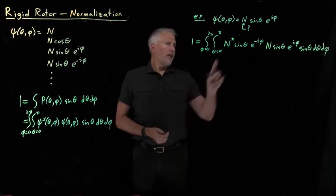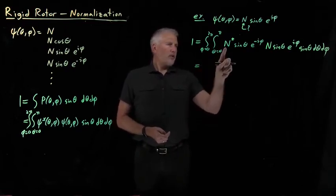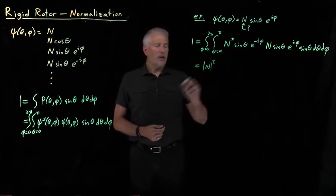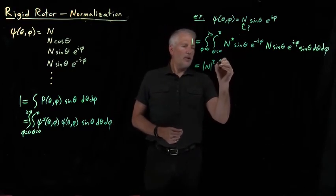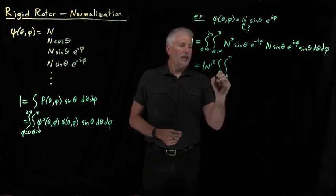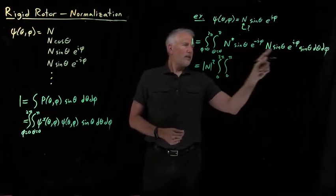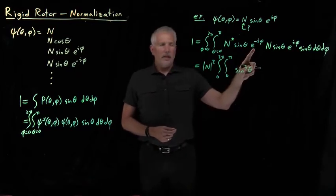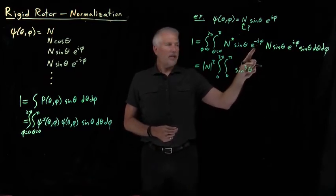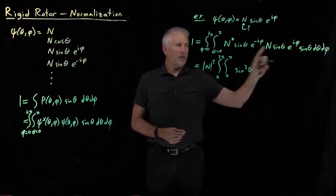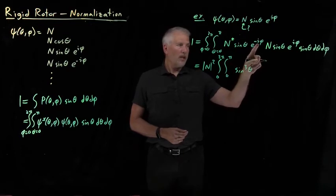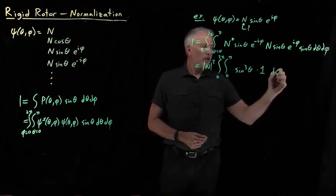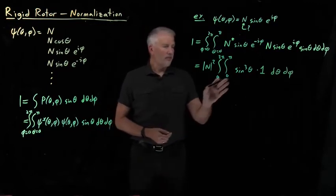We can clean this up a bit. The n's can be pulled out of the integral — they're just constants — so n-star times n gives us the modulus squared of n. I have a double integral with three factors of sine from the two sines in the wavefunction and the integration factor. The complex numbers turn out to be no problem: e to the minus i-phi times e to the positive i-phi cancel each other and give 1. So the exponential terms just contribute 1, and I'm left with n-squared, the sine-cubed factor, d-theta d-phi.